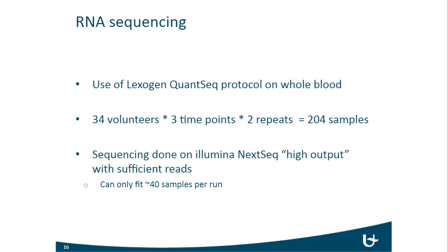For the RNA sequencing, we had three time points — day zero, day three, and day seven — using the Lexagen QuantSeq protocol on whole blood samples. With 34 individuals, three time points, and two technical replicates per time point per individual, we had a total of 204 samples to sequence. We sequenced on an Illumina NextSeq in high output format, fitting 40 samples per run. This required careful attention to how samples were divided across runs to avoid batch effects.